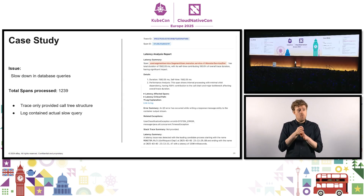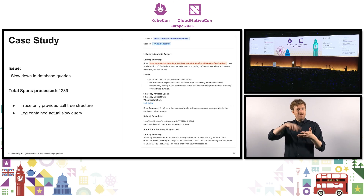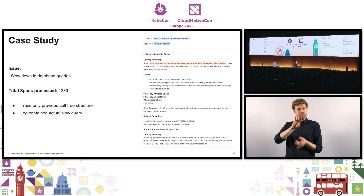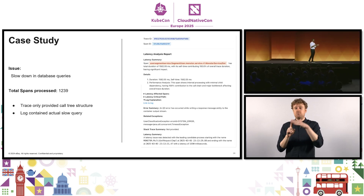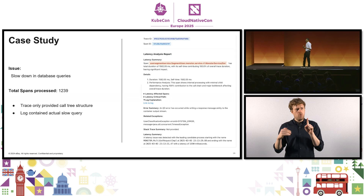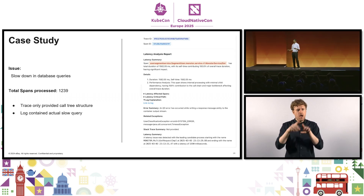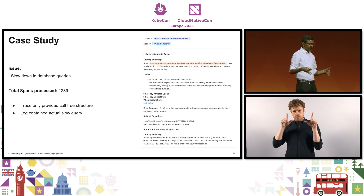Where did it come in handy? We had an issue with a slowdown in database queries with roughly 1,300 spans within that trace. The trace explainer came in and said that the user segment service has a particular span taking a lot of time — enough to tell us which service in the call chain had problems. Then the log explainer said there is a timeout exception to be worried about. This basically saved our SRE quite a bit of time in identifying what was going on — otherwise they would have to manually go to the logs and traces to find out.